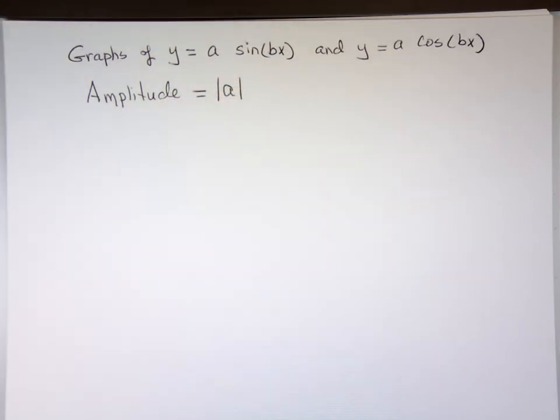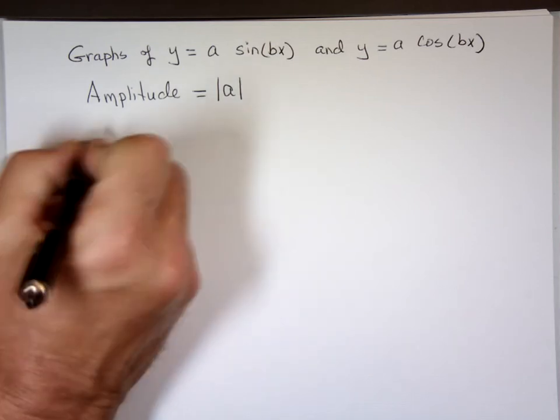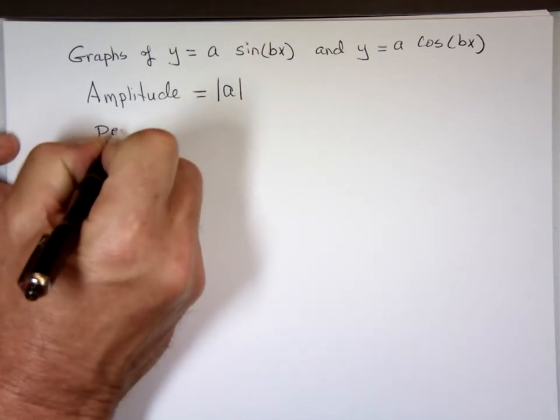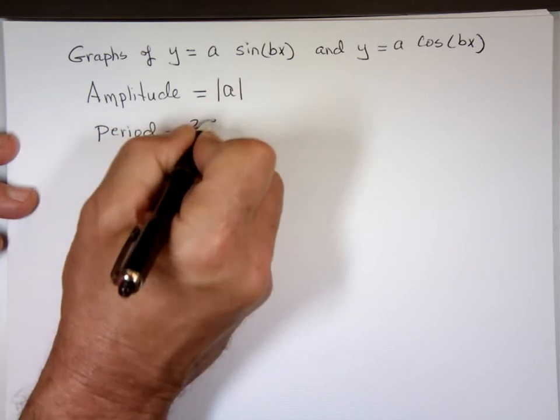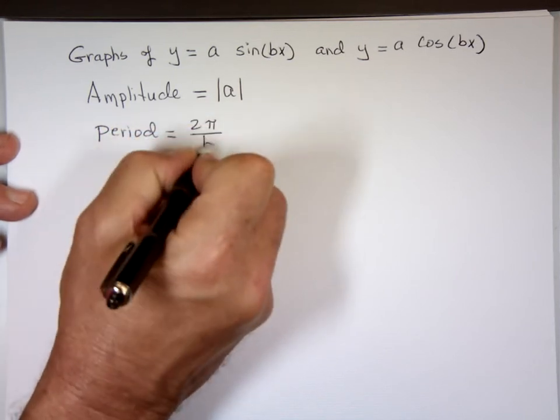Bless you. So what does B then do? What's the purpose of B? B actually controls the period. The period is controlled by B. It's always 2 pi divided by B.